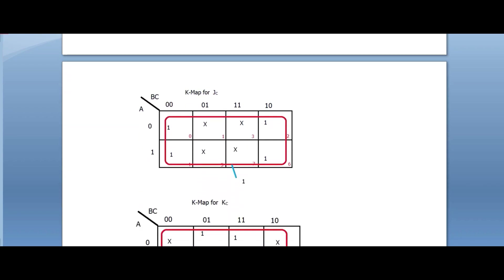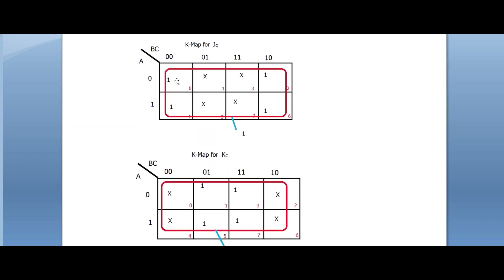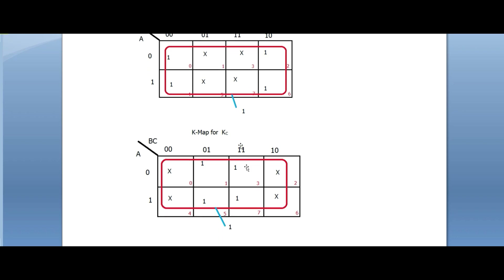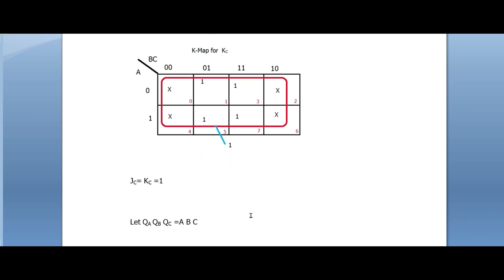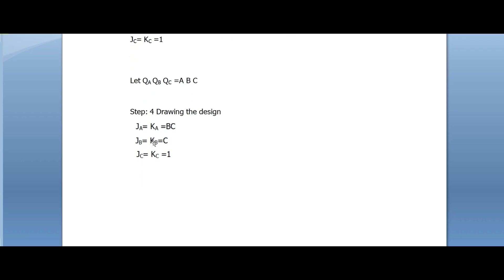For JC, the K-map grouping produces only a quad initially, but the four don't-cares help form an octet. In a three-variable K-map, when all eight cells are grouped together as a single group, the value is 1. So JC = 1 and KC = 1.